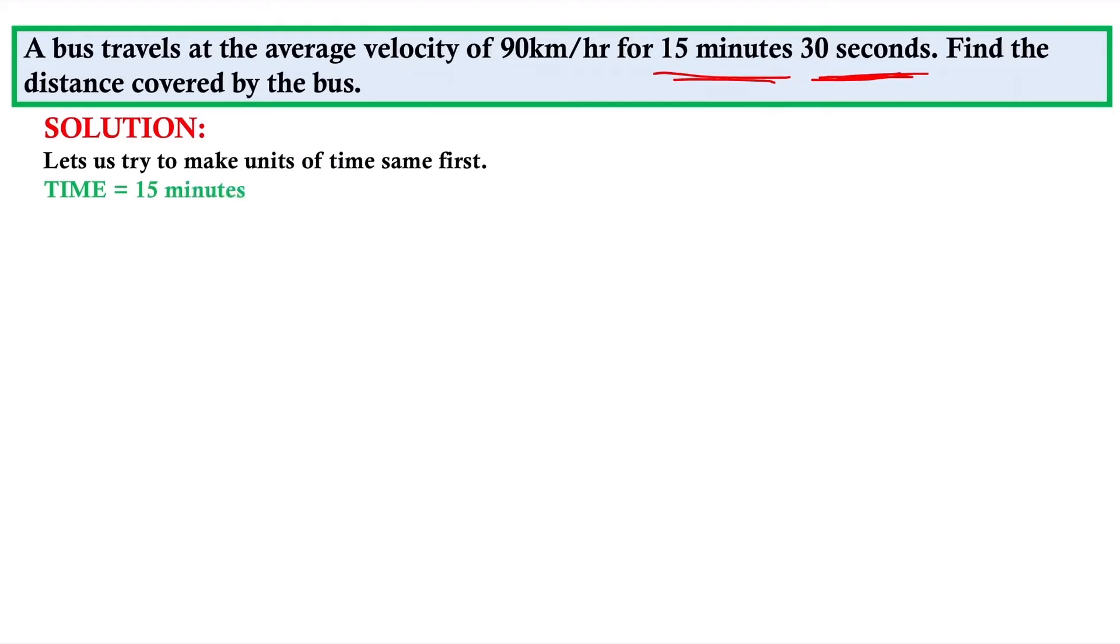Time is 15 minutes and 30 seconds. Let us convert into seconds. It will be quite easy. 15 minutes will be 60 seconds each, so 15 into 60. Since 1 minute equals 60 seconds, that is 900 seconds plus 30 seconds, which equals 930 seconds.